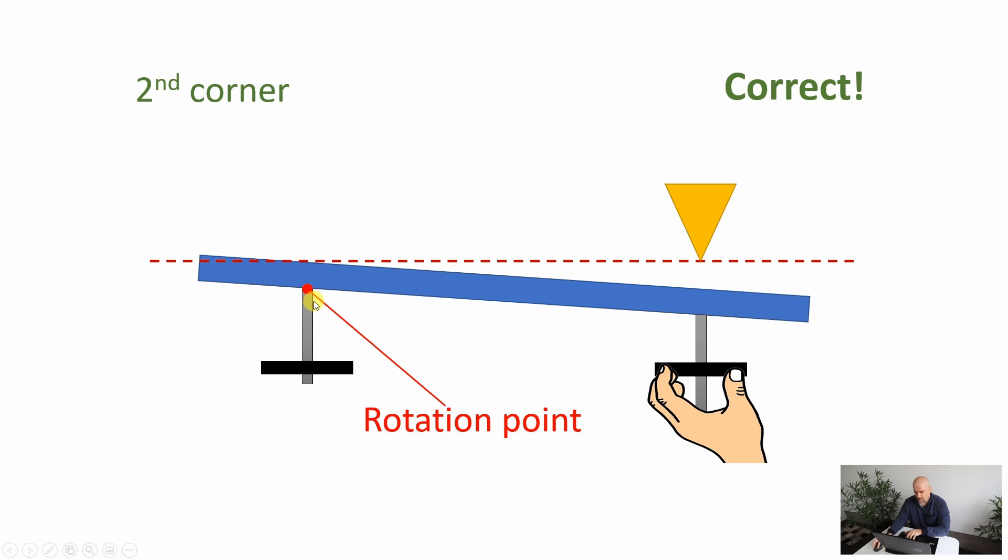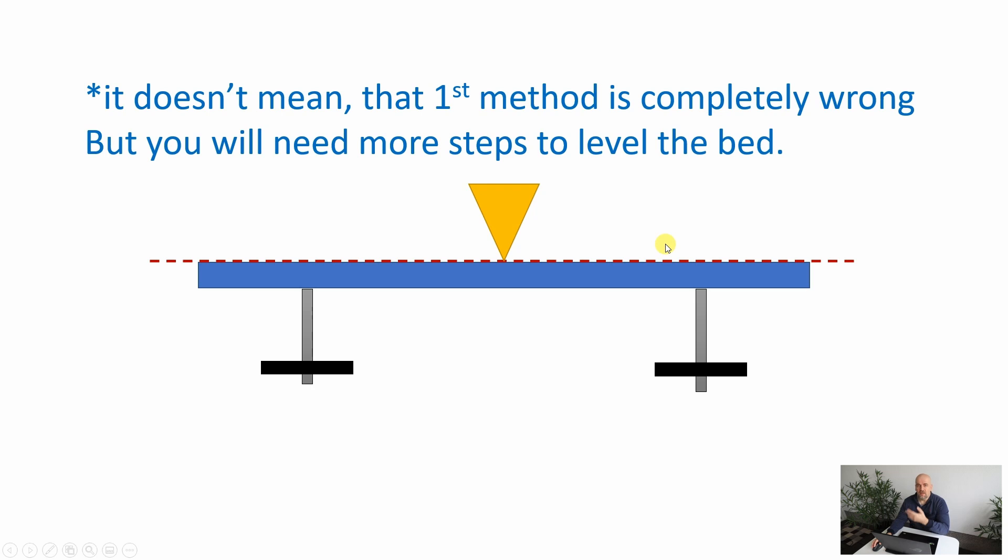Again we rotate this knob around this point and get the perfect distance. And look, in only a few steps we have the bed leveled. Of course, it doesn't mean that the previous method is completely wrong, but we will need more steps to get the perfectly leveled bed surface.